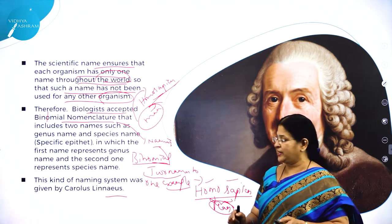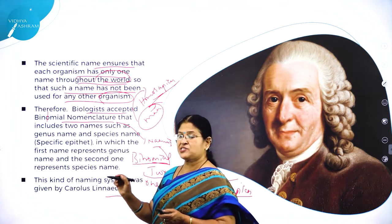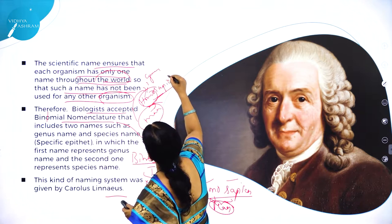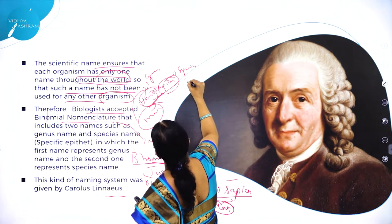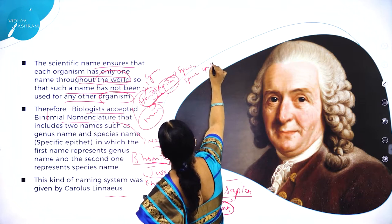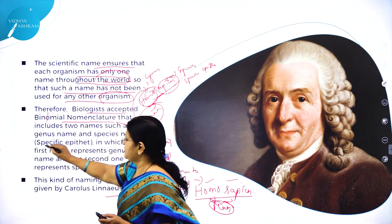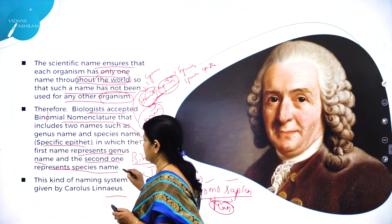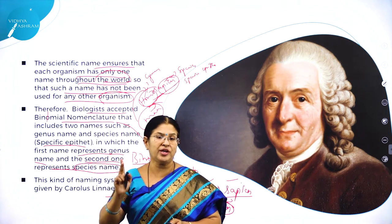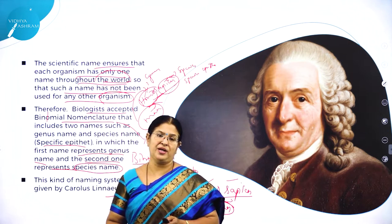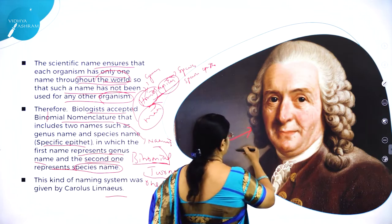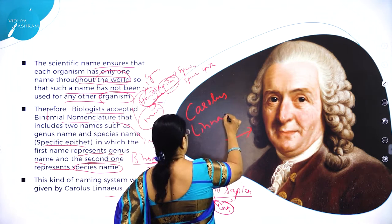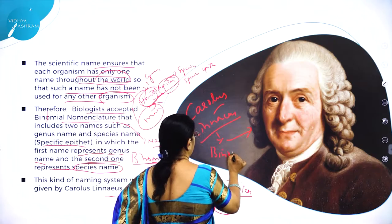The first name refers to genus, and the second name — 'sapiens' — refers to species, which is also called the species epithet or specific epithet. The first name represents the genus name and the second represents the species name. This type of giving two names to one organism is called binomial nomenclature.